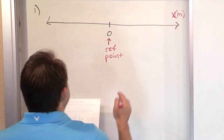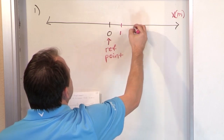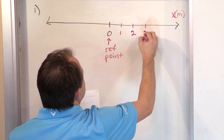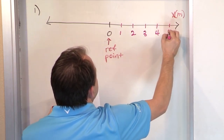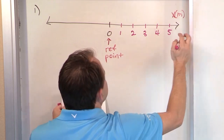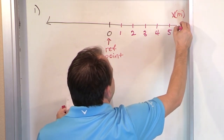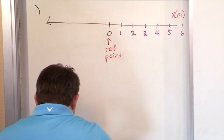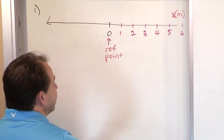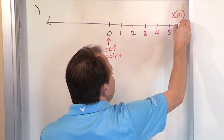So what do we have on this number line? We have x equal to one, two, three, four, five, and so on — they go out to positive infinity in this direction, as you all know.